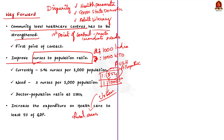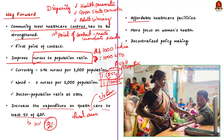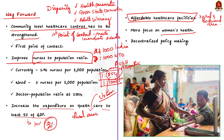Thirdly, India needs to increase expenditure on healthcare to 5–10% of GDP; currently it is stagnating at less than 2%. Fourthly, affordable healthcare facilities are the need of the hour — specialized geriatric facilities remain out of reach for most people especially in rural and backward areas. More focus should also be given to women's health, as improvement in the health of the mother will improve IMR and reduce the number of underweight children. Finally, a decentralized policy involving all stakeholders from every segment of society is needed. All these measures will help India achieve universal health coverage and realize the vision of health for all.